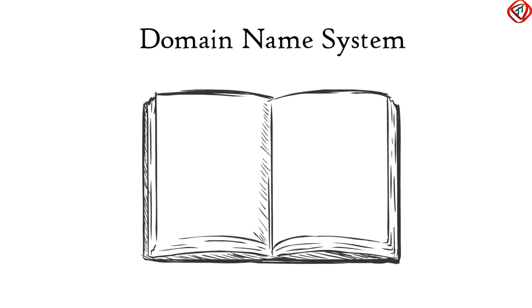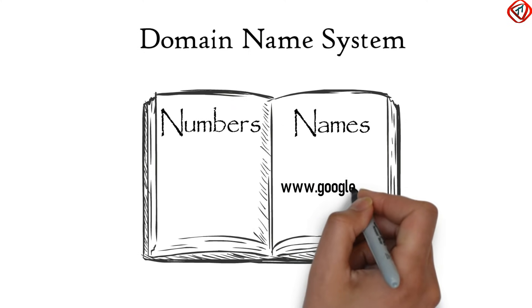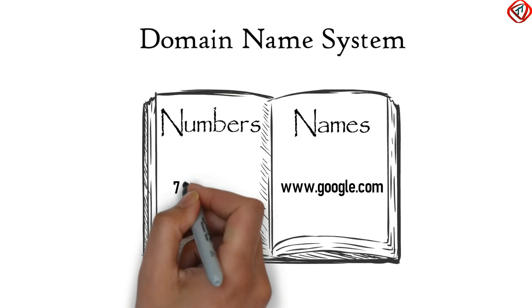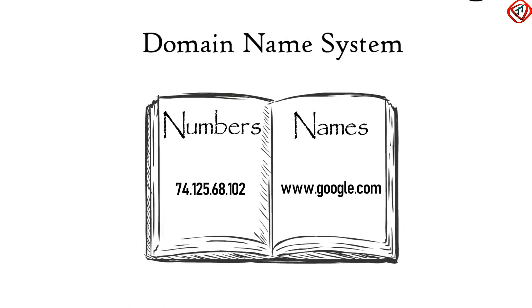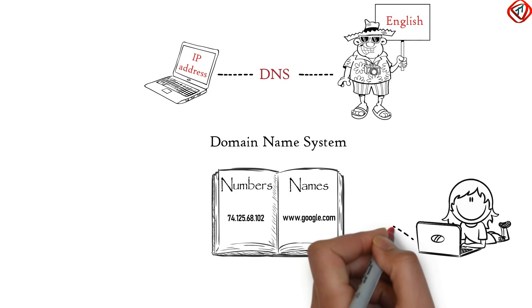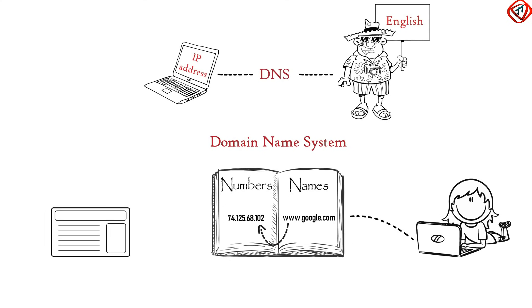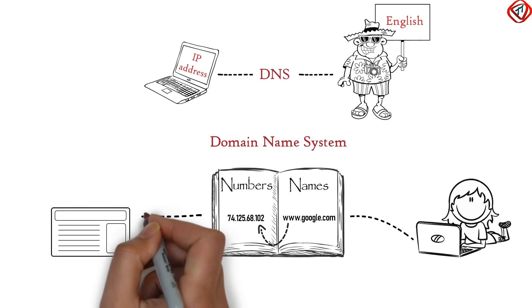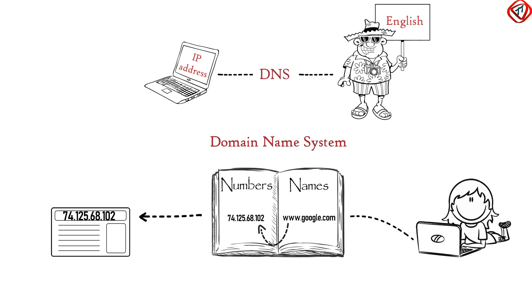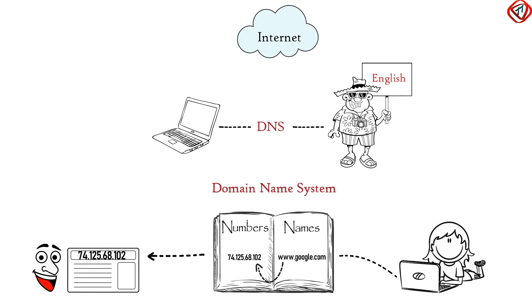DNS, or domain name system, maintains a table where names are mapped to numbers — or more specifically, where website's domain names are mapped to their IP addresses. Now, when we type google.com in the web browser, DNS translates it to the web browser's language, that is IP address, and gives it to the web browser.